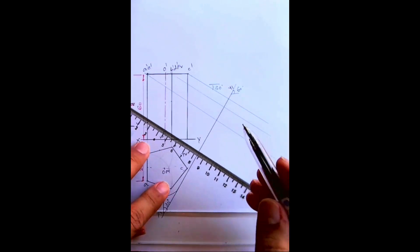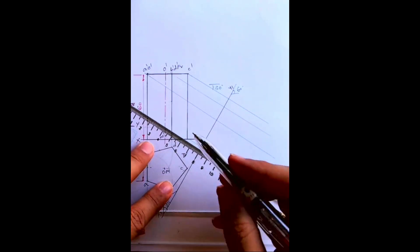So you take lines from A dash, E dash, B dash, D dash, C dash, and you take from the bottom point as well.